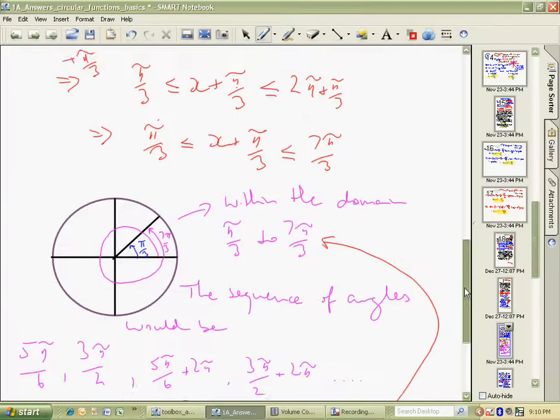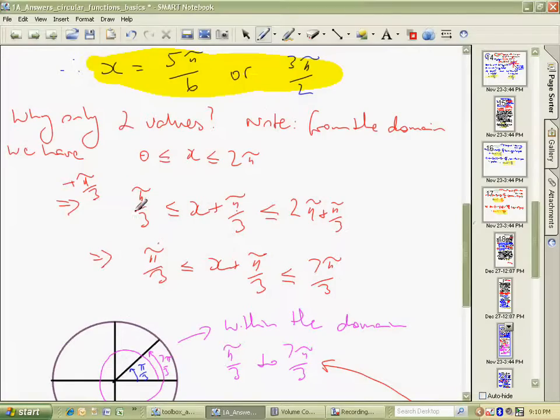When we add π on 3 to both sides, to all of it, we get that, this and this. So, finally, we end up with x plus π on 3 is between here and here. Now, where is that? Well, that means you've actually gone around twice, because that's equal to 2π plus π on 3, isn't it? That's what that equals.